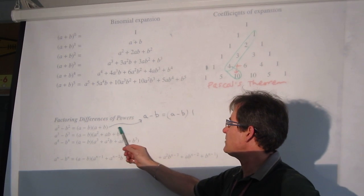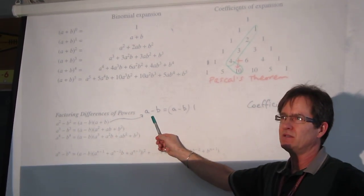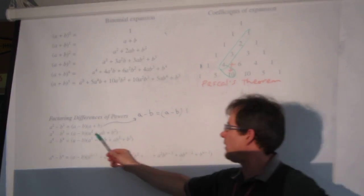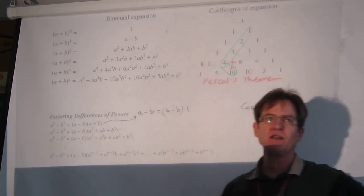Now the one they didn't put up here was just a-b. It's a trivial example, but a-b is (a-b) times 1. So all of these factored forms have (a-b) at the beginning.